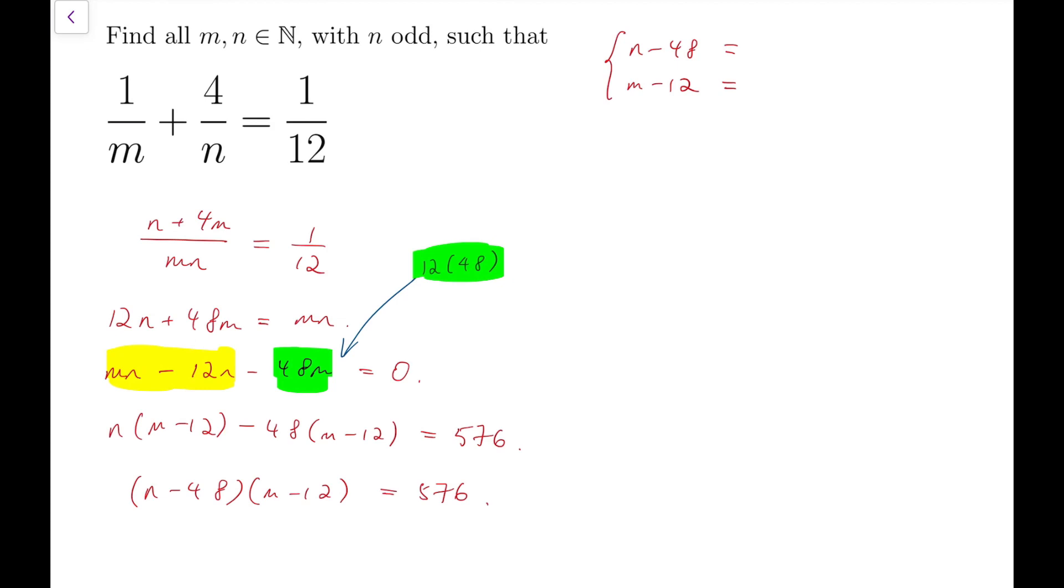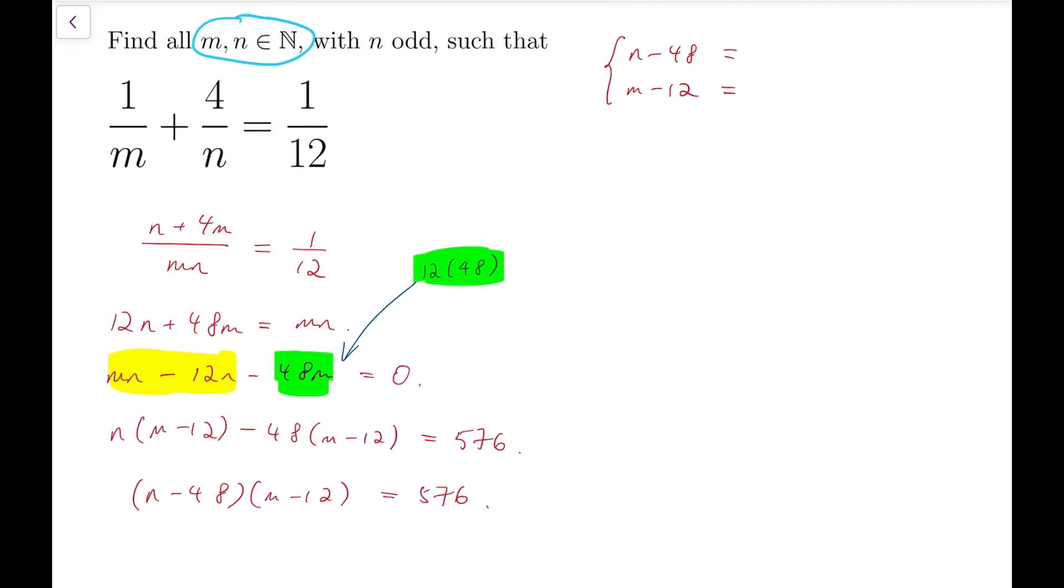Now, these two numbers must be integers. At this point, we only know that they're integers, but not positive, because we only know that m and n are positive, but we do not guarantee that n minus 48 and n minus 12 must also be positive.